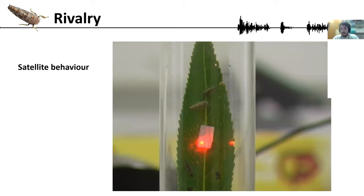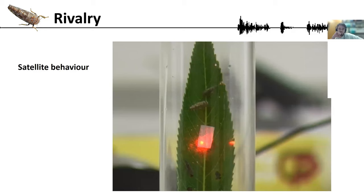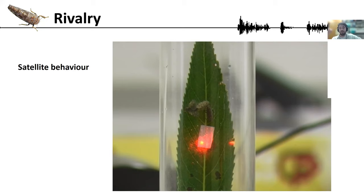We also observed satellite behavior in Orientus Ishidae. In a video, we can see three animals: one male on top who is not singing, a female below him, and another male on the leaf who has been singing for nearly 20 minutes. The male that was on top of the female mated with her without singing at all — he figured out where the female was and mated with her before the male that had been singing for so long could reach her. This was satellite behavior, and it was also observed in Orientus Ishidae.